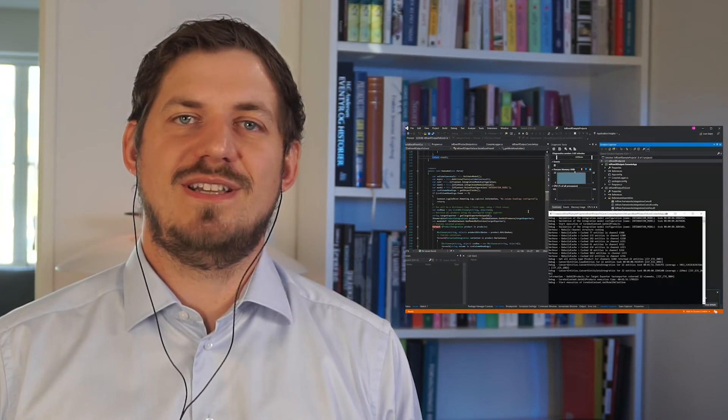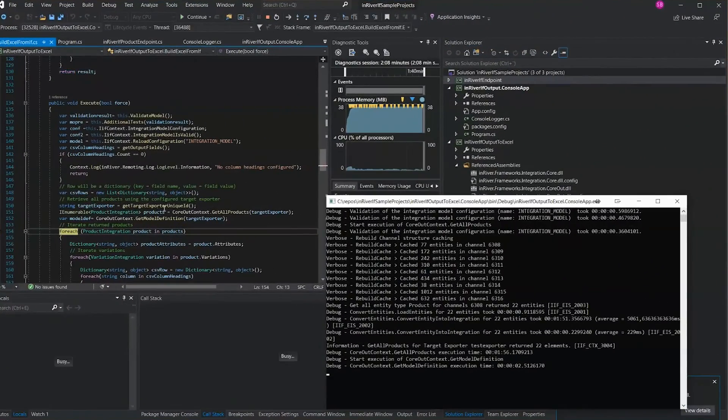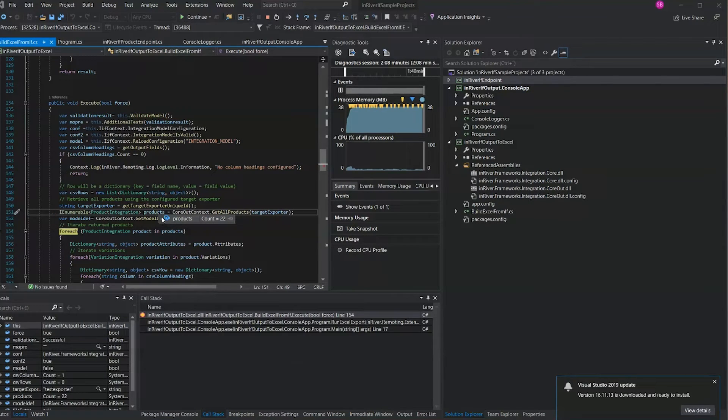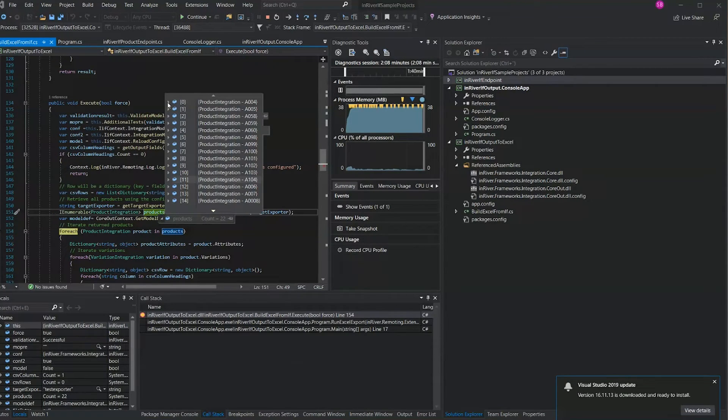Now that I have set up the integration model, I can begin to run the adapters of the framework. Here I am running the custom code example from the community page, and the integration model is available for inspection. Testing the integration model in this way is useful, as debugging is not possible for the Salesforce B2B adapter or the Adobe Magento adapter.